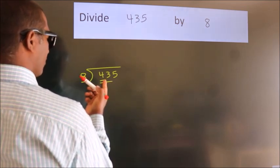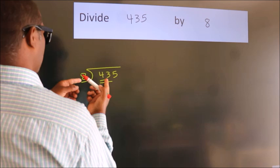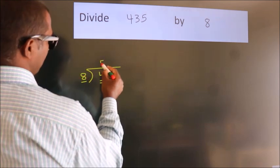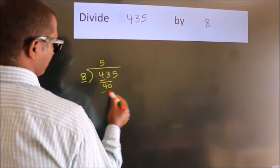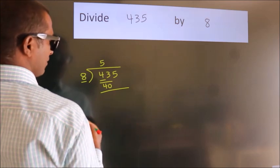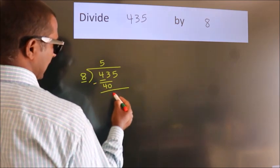A number close to 43 in 8 table is 8 fives 40. Now we should subtract, we get 3.